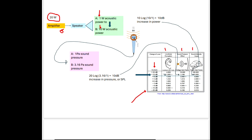We've increased our acoustic power by a factor of 10. There's an equation for decibels with respect to power: 10 log of (10/1) — the increased amount divided by the reference — gives us a 10 dB increase in power. Looking at sound intensity, a power gain of 10 is also a 10 dB increase — they coincide on this particular line, though they don't always coincide.